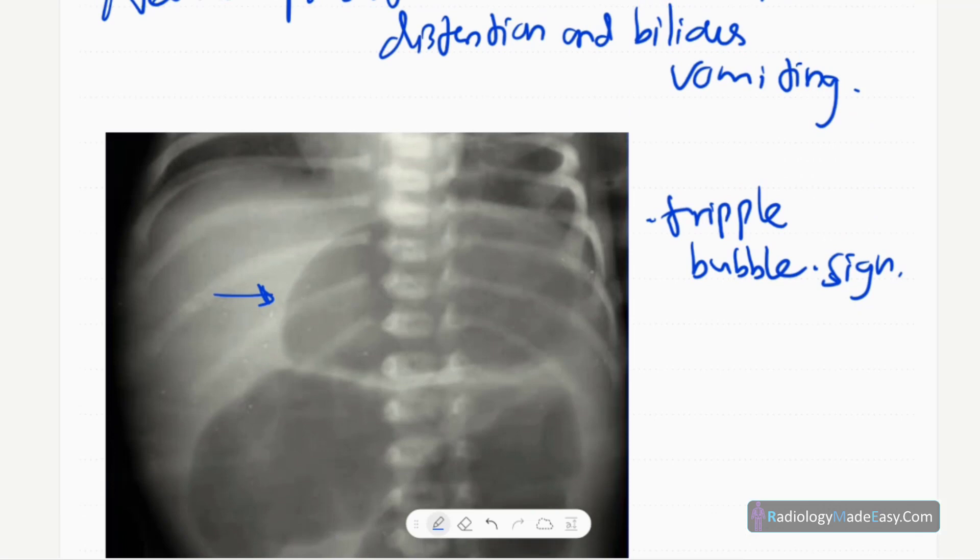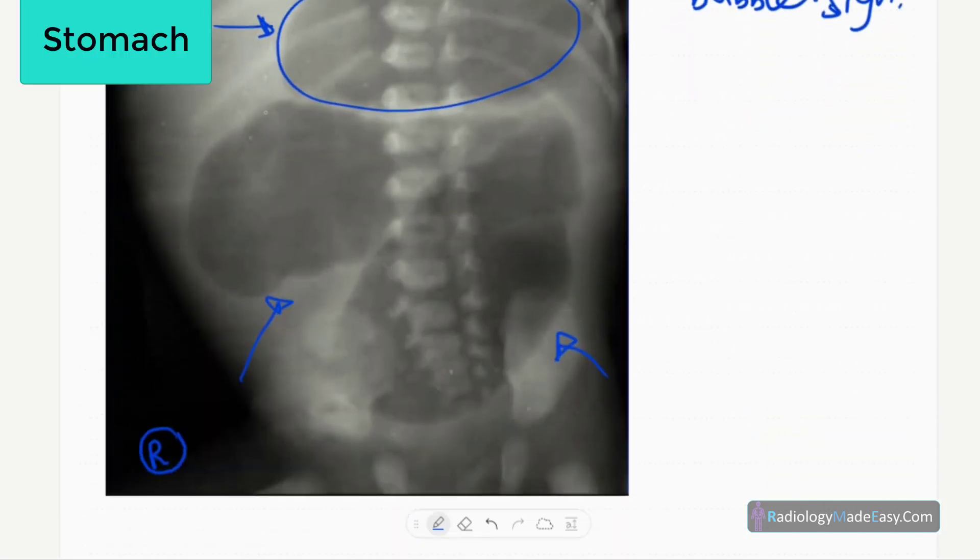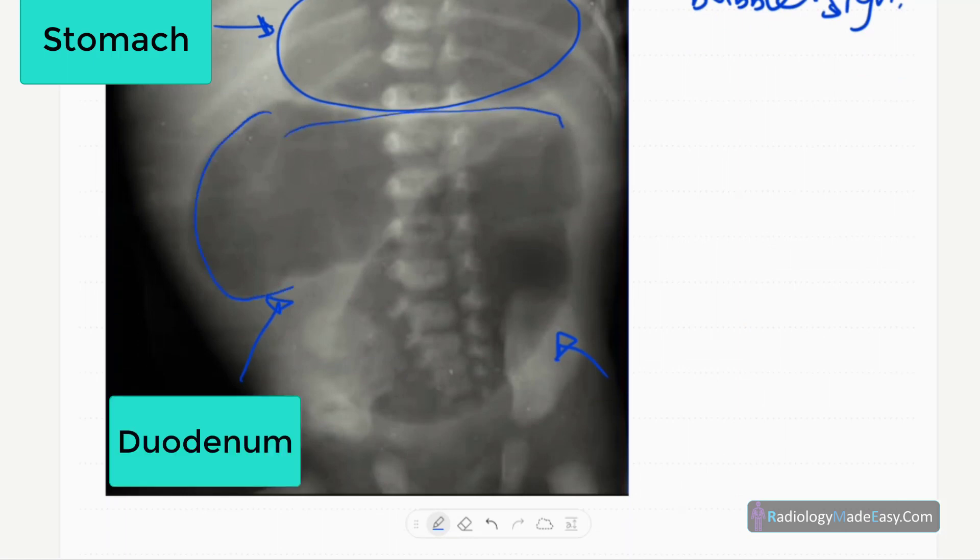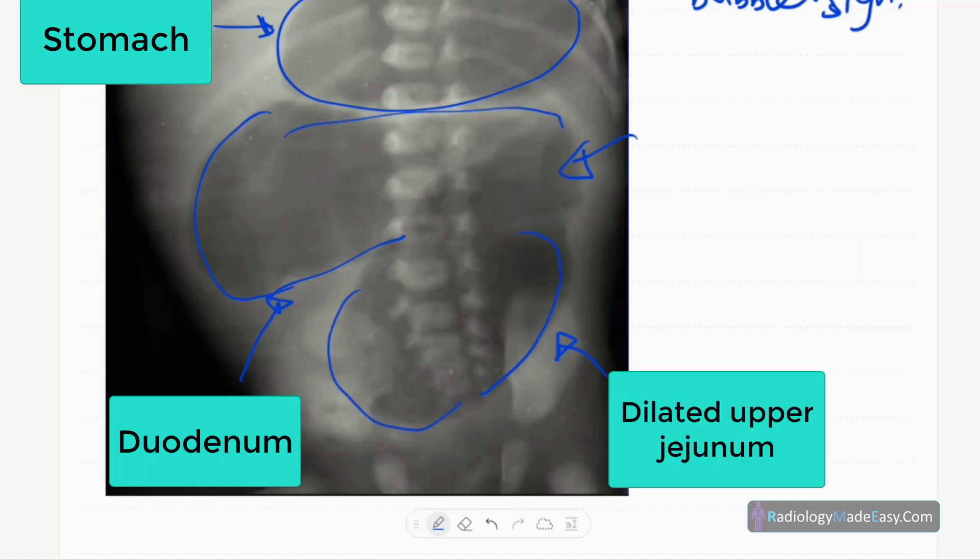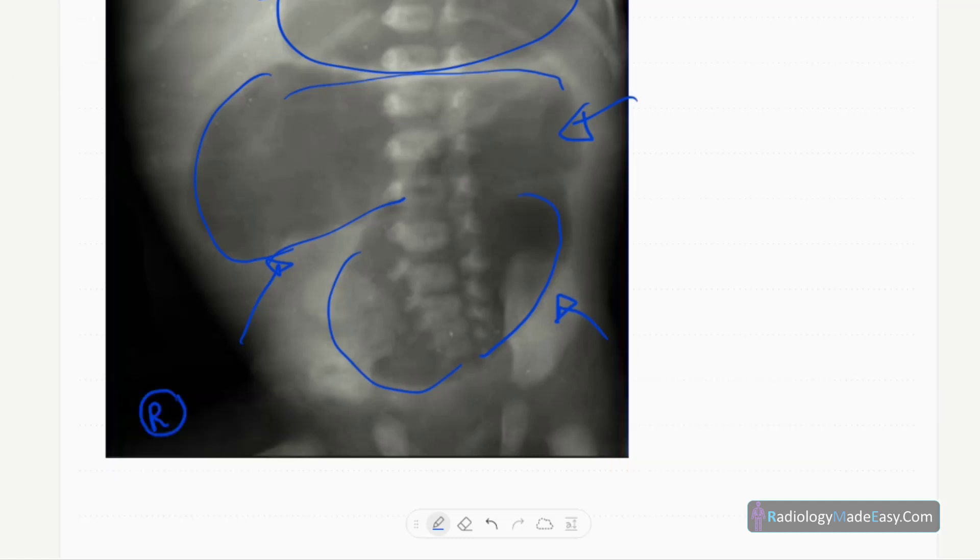This bubble represents the stomach, this is the duodenum, this is the DJ flexure, and this is the dilated proximal jejunum. So probably there's a proximal jejunal obstruction. You don't see distal bowel loops - the distal